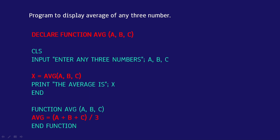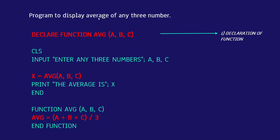We'll discuss with this simple example: displaying the average of any three numbers in QBasic. At the top you write: DECLARE FUNCTION abc(a, b, c). This is the declaration of the function. In the declaration we write DECLARE — that's a keyword — then FUNCTION, also a keyword. Here I've written abc as the function name because we are calculating average, so you can write average or abc — your choice.